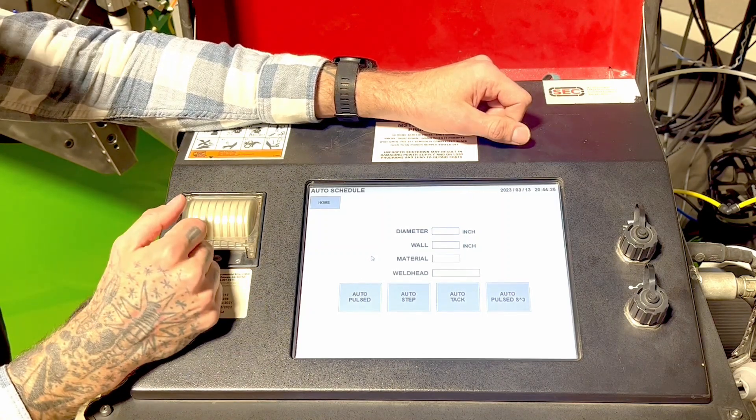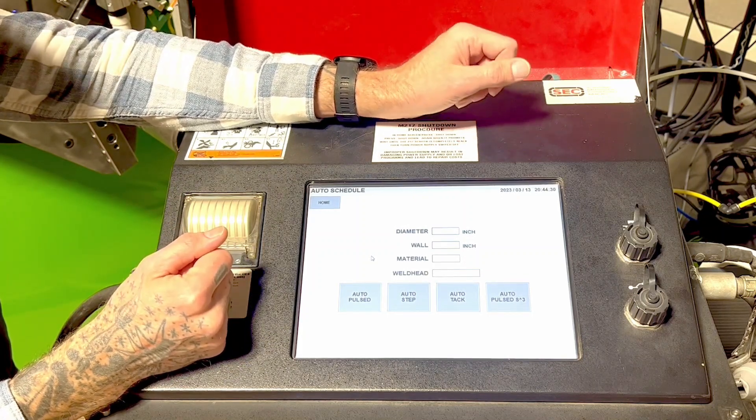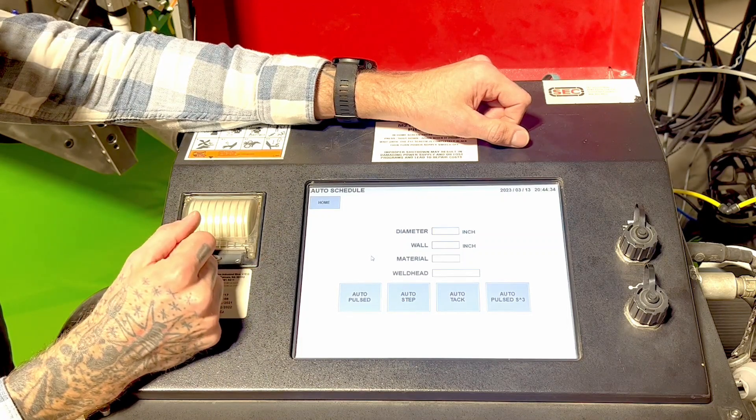So we're going to be welding one inch 065 wall 316L on the A4000 closed fusion weld head. Let's put these parameters in and let's get this thing going.